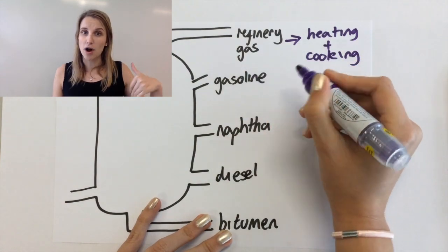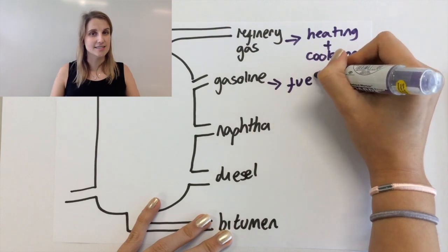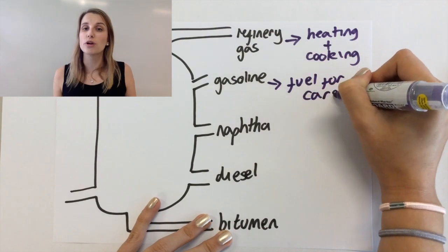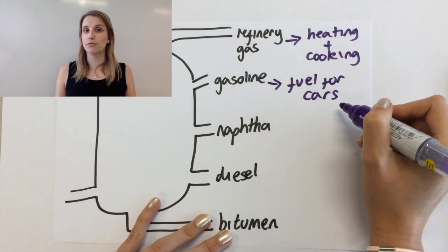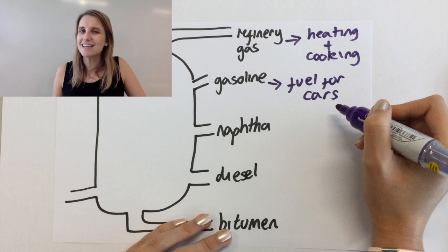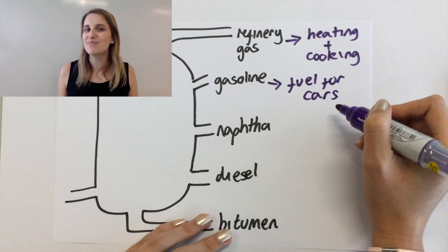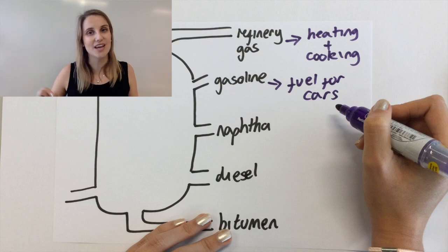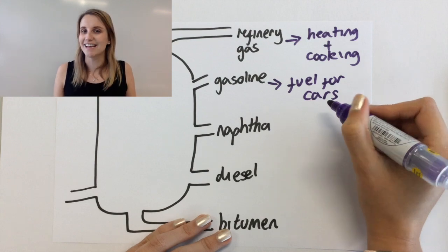The next one is gasoline, sometimes known as petrol, which we use as a fuel for cars. Now be careful with this one because if you just write that it's used in cars, then it kind of sounds like you're using gasoline to make a car, so make sure that you put the word fuel in there to make your answer clear.